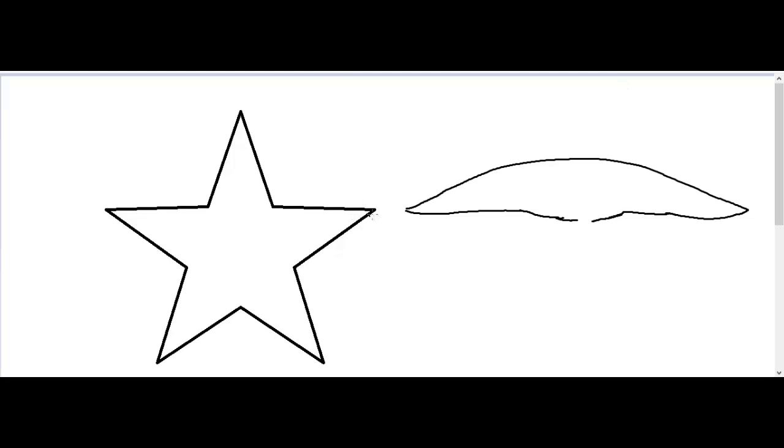Now we are going to focus on the digestive system of the starfish. Here we have the aboral side. That would be the anus of the starfish.